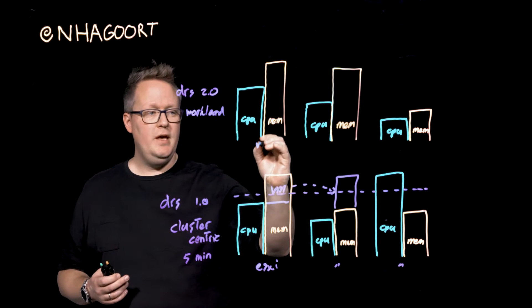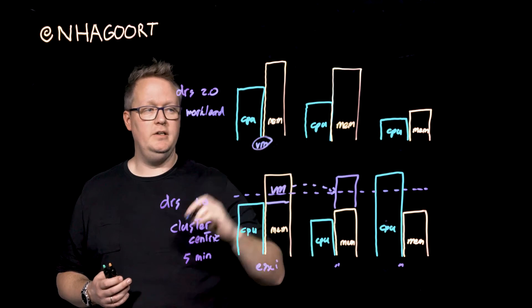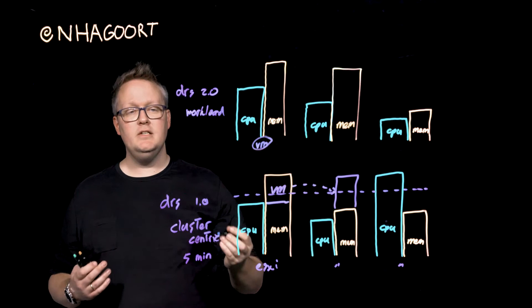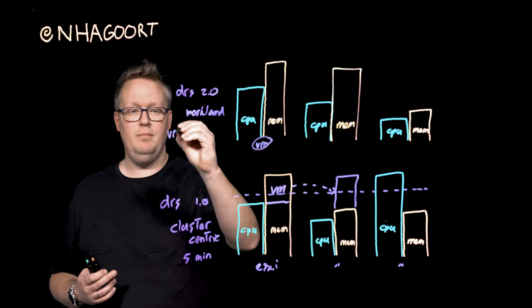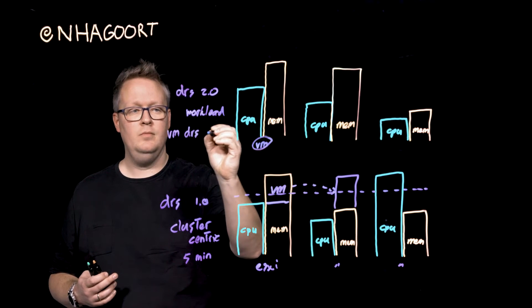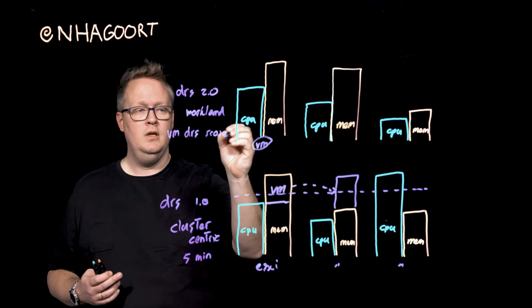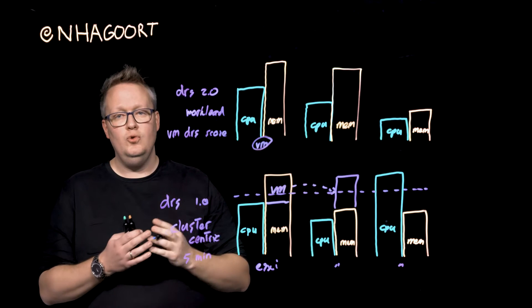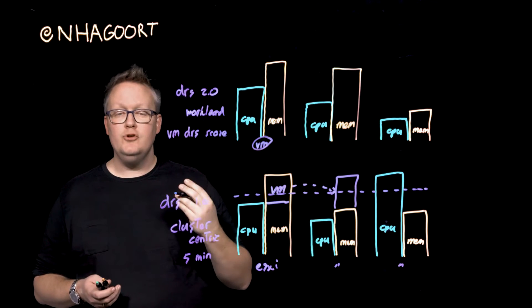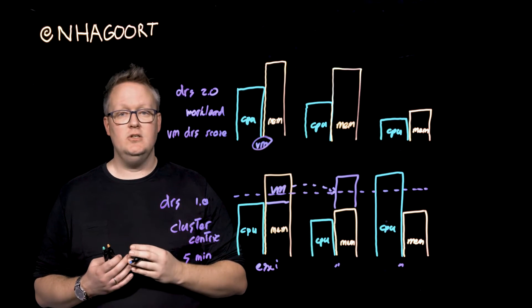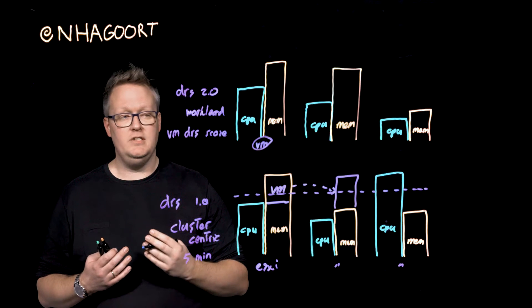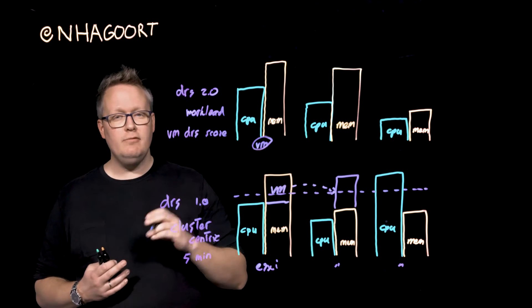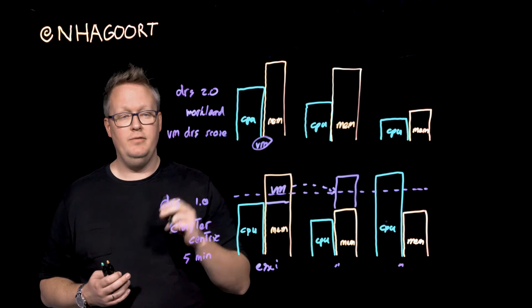Meaning that whenever we have a virtual machine running on an ESXi host, we calculate something that is called the VM DRS score. This is a new construct. And we use this score to verify if a virtual machine is scoring enough, if it's happy enough. And we have several metrics to calculate the VM DRS score.